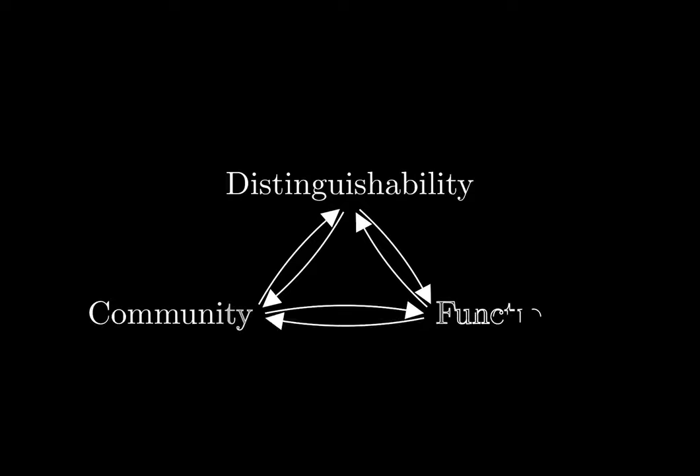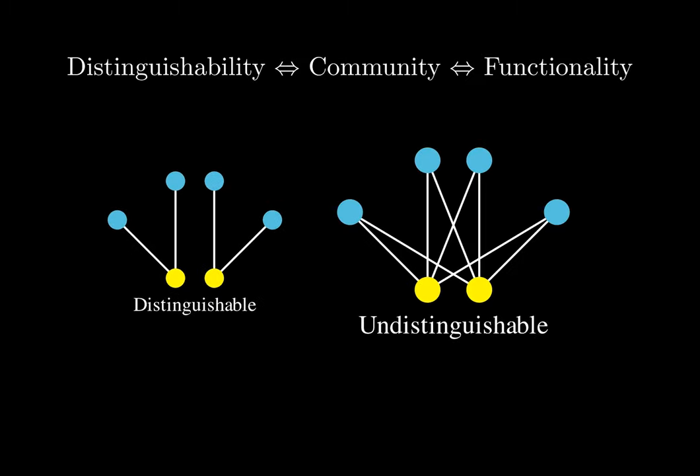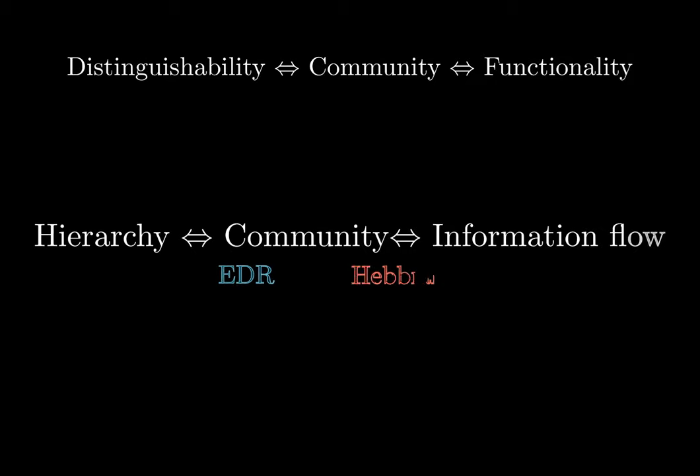To conclude, we want to state that at the level of cortical areas there is a connection between distinguishability, community structure, and functionality. Areas with distinguishable connections would display different functions, while more indistinguishable areas would likely perform similar jobs. There is a striking similitude between the community and SLM hierarchies.